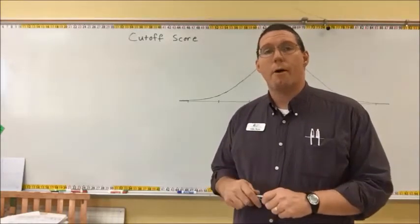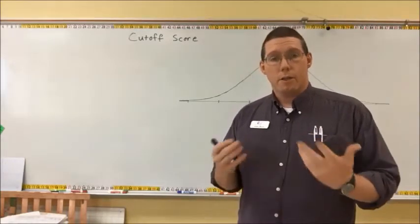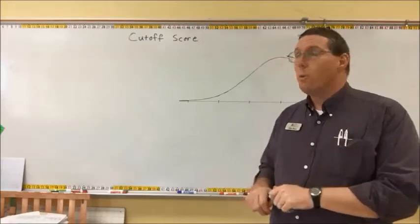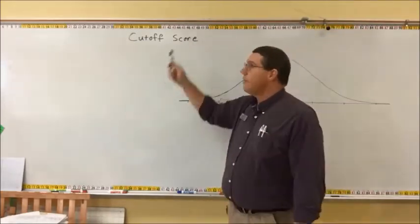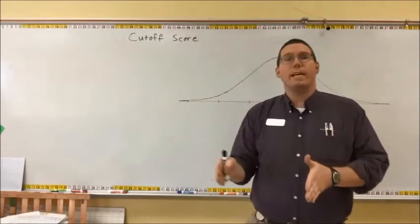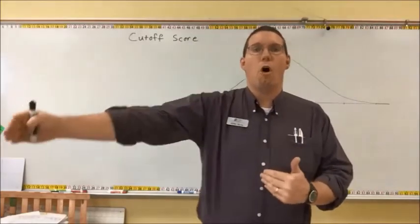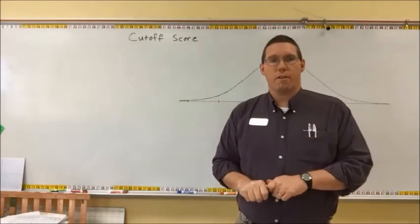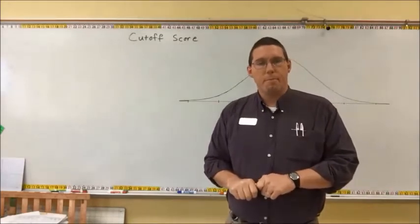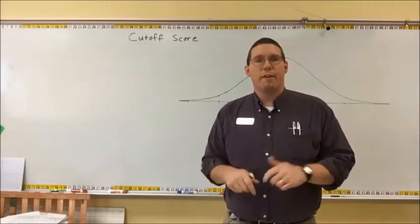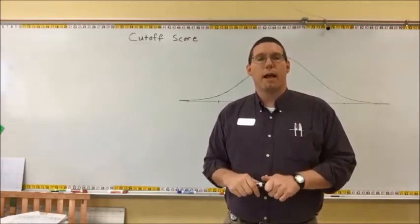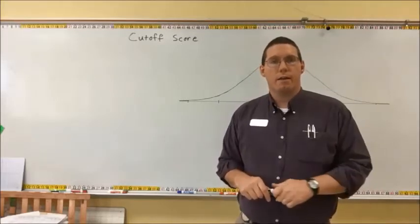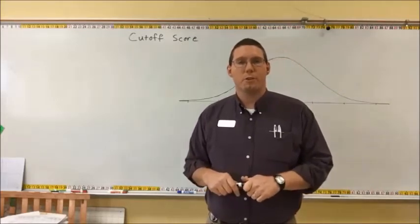Another cut-off score could be something like this: we're only going to allow people into this tournament if they won at least 70% of the games they played last season. We only want certain people in this tournament, so you're setting a criteria. This word 'criteria' is very important in statistics and research — we are setting a score that is a criteria for being passed on to the next level of assessment.